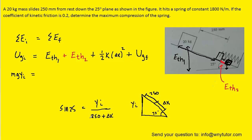And because the 250 is in millimeters, it's going to be wise to convert that into the standard unit of meters. So we have 0.25 plus delta x. We could solve this equation for yi by multiplying both sides by the 0.25 plus delta x. And when we do that, we get this expression for yi. So we're going to substitute that expression for yi into our initial gravitational potential energy expression.